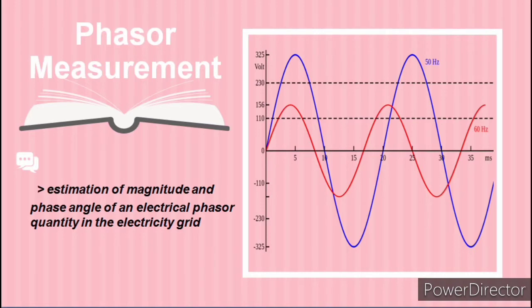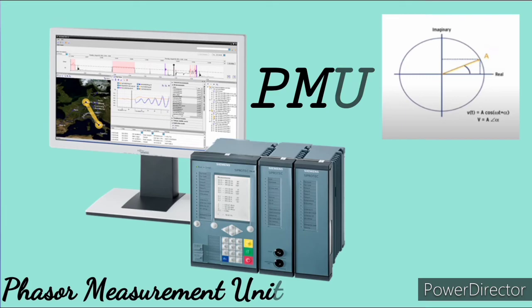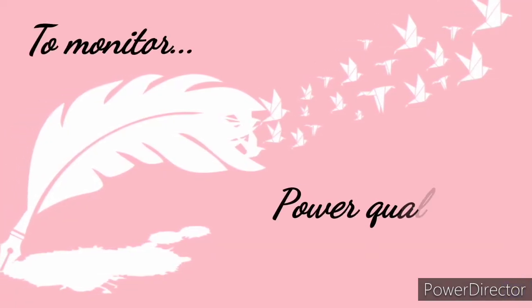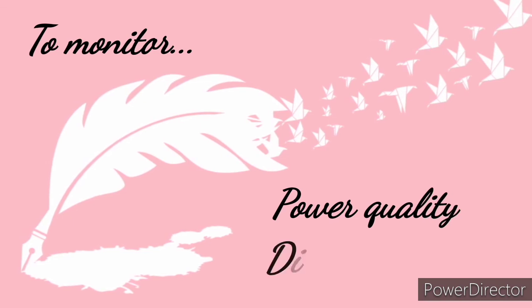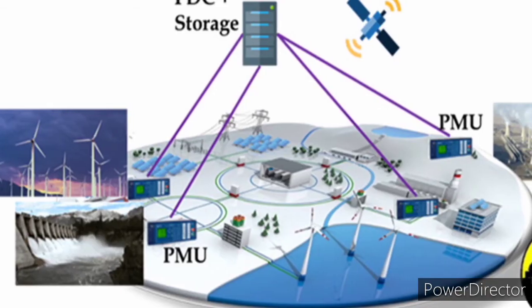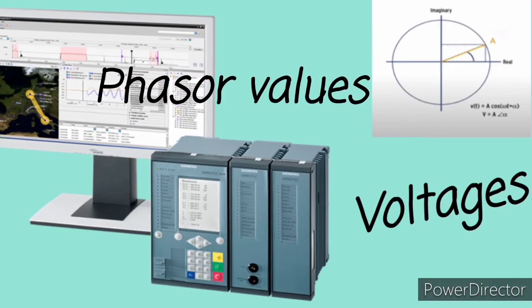Second is the phasor measurement. Smart grid utilizes high-speed sensors called PMU or the phasor measurement unit to monitor power quality and the power grid for disturbances. PMU measures the phasor values and the voltages.